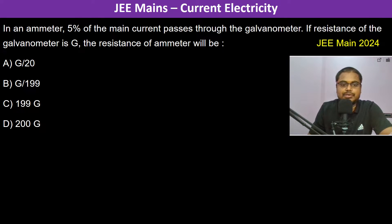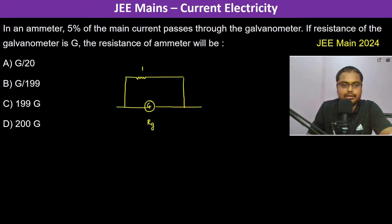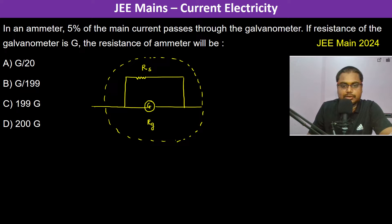In an ammeter, 5% of the main current passes through the galvanometer. An ammeter is basically a galvanometer with a resistance in parallel. This is the galvanometer with its own resistance Rg, and there is a shunt resistance in parallel to it. This entire setup is the ammeter, marked here with dotted lines.